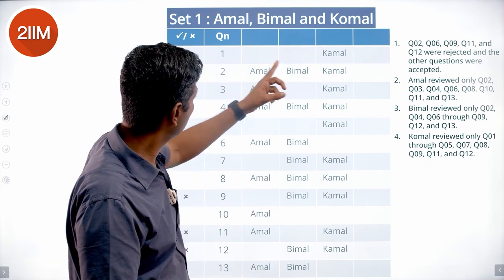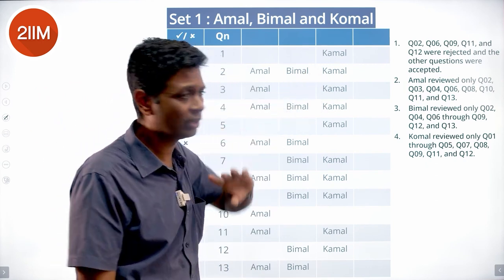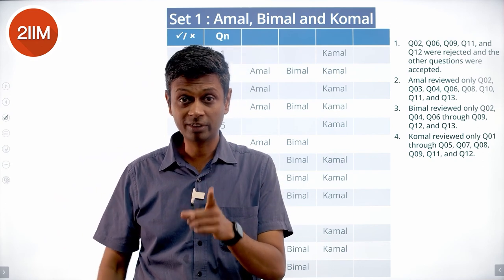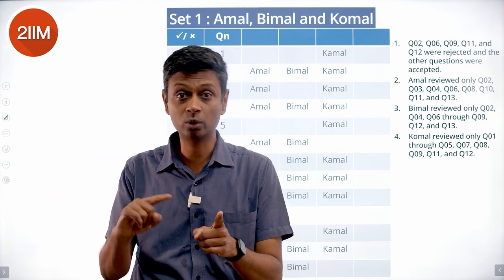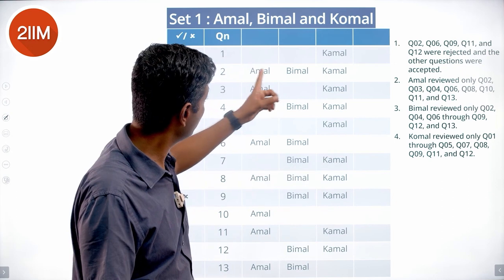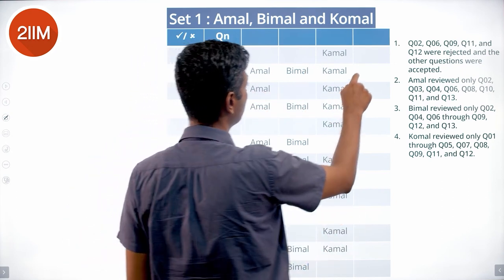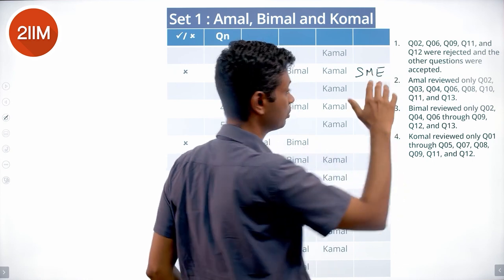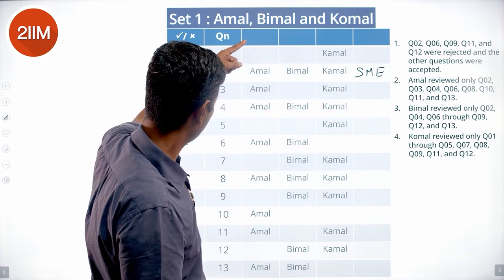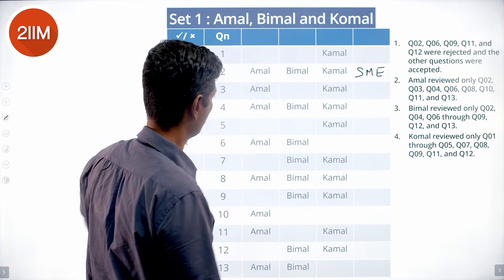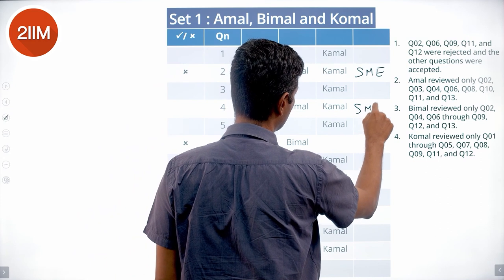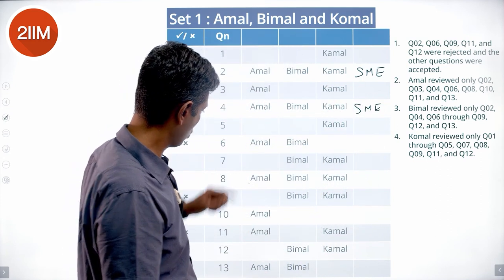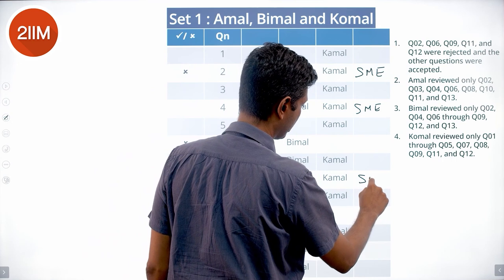For Q2, which was reviewed by Amal, Bimal, and Komal — if any one reviewer created the question, only the other two would review it. Since all three reviewed Q2, it must have been created by an SME. Similarly, wherever all three reviewers are involved, the question was created by a subject matter expert.